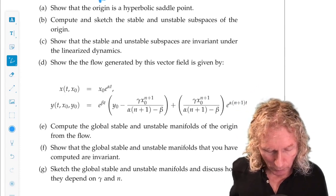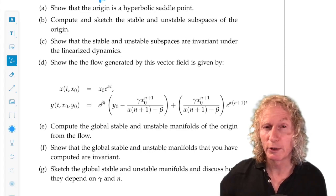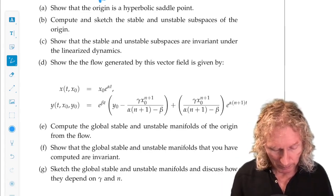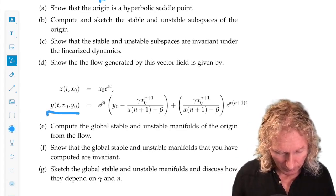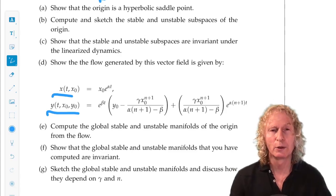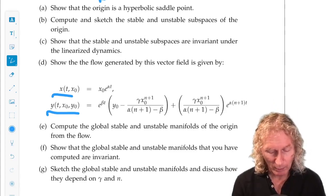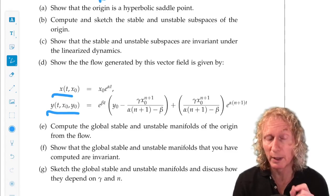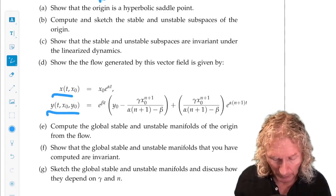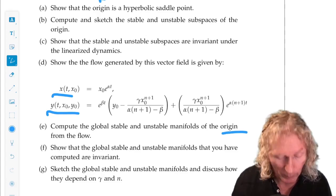Now I want you to find, compute the flow generated by that vector field. And I told you how to do that for my example earlier on. And then compute the stable and unstable manifolds, global stable and unstable manifolds, of the origin, from the flow.